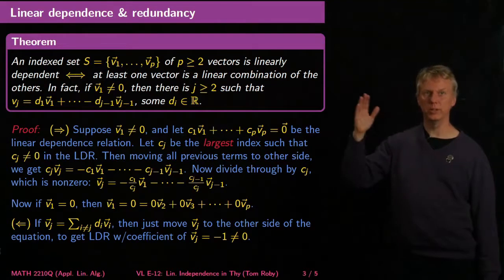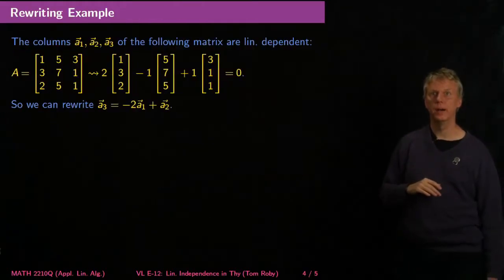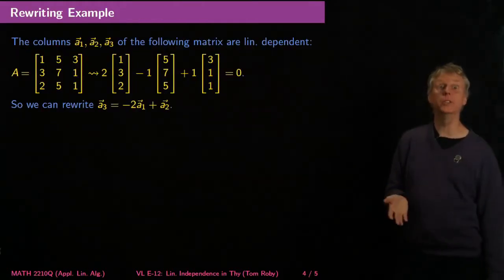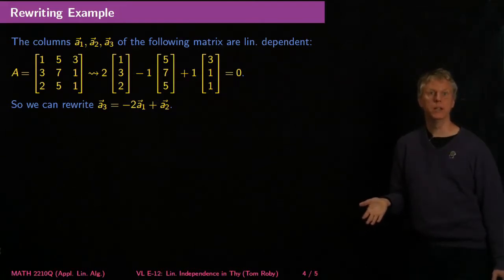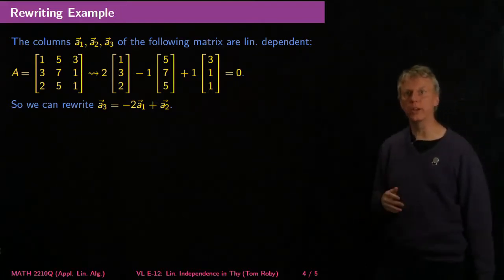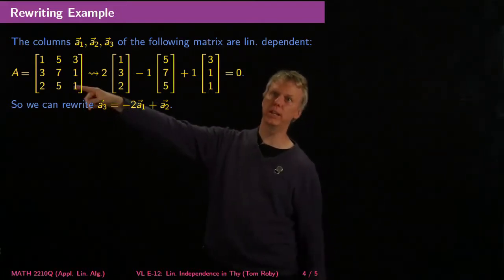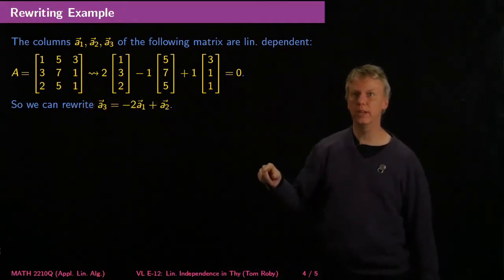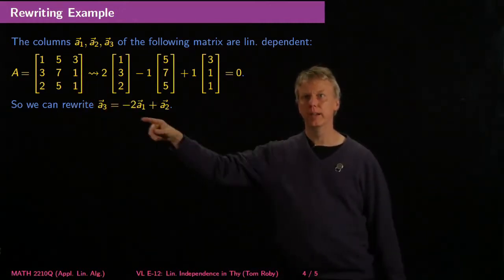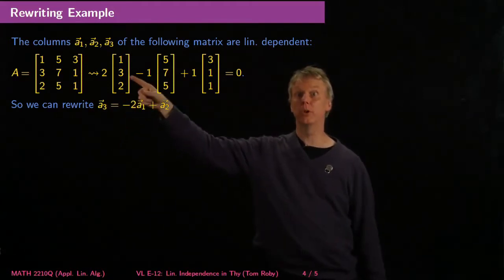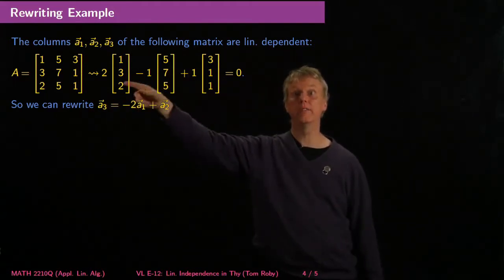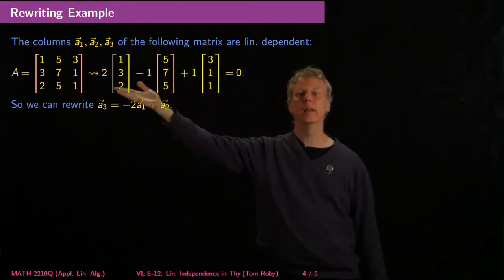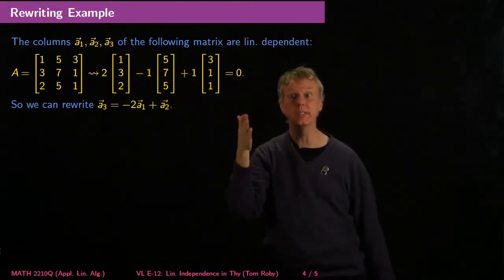Bottom line: linear dependence basically means that some of your vectors are redundant when it comes to making linear combinations. Let's look at this running example we've had before. We've seen this matrix A, and in the last video lecture it had a homogeneous solution which was multiples of (2, -1, 1). If we take 2, -1, 1 and make that linear combination of the columns, we get zero.